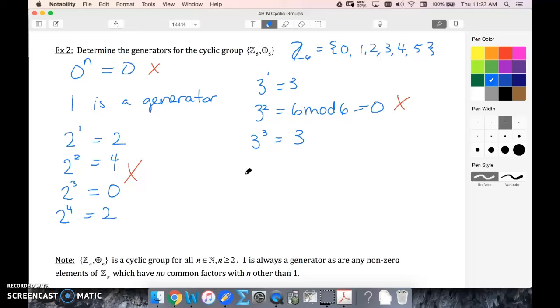Four. Eight mod six is going to give me two. When I do my third one, I'm going to add another four to this and get to zero. Now I come to four to the fourth, which is just my repeated addition, and now I'm back to four. I'm just going to keep cycling through these, so again, I do not have a generator.